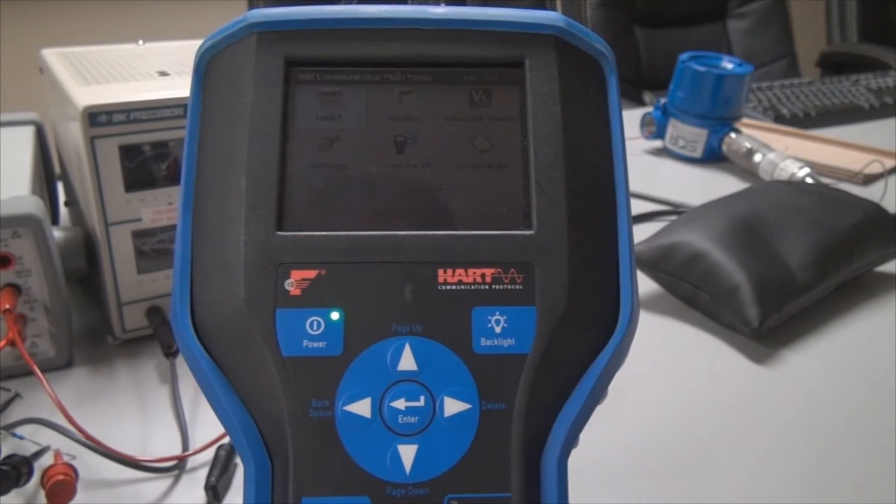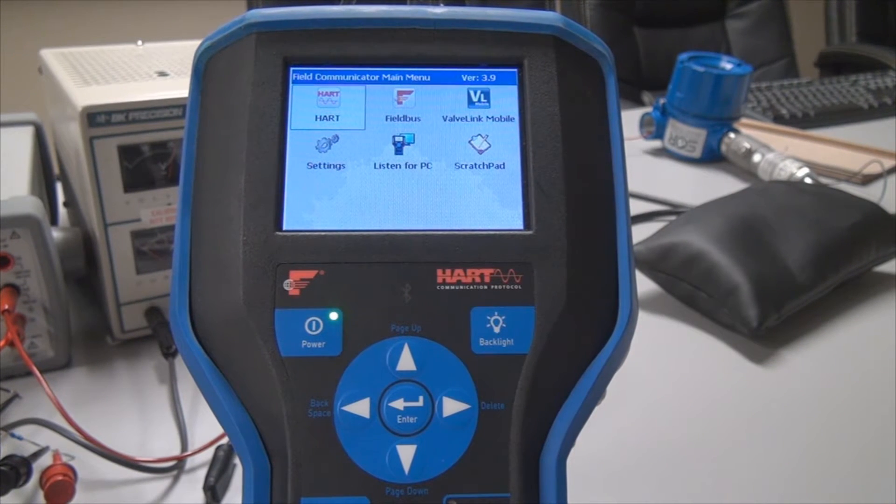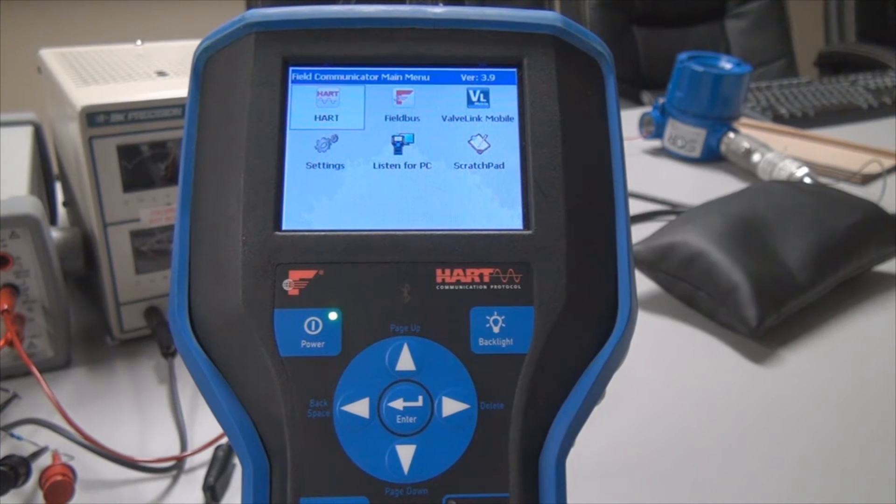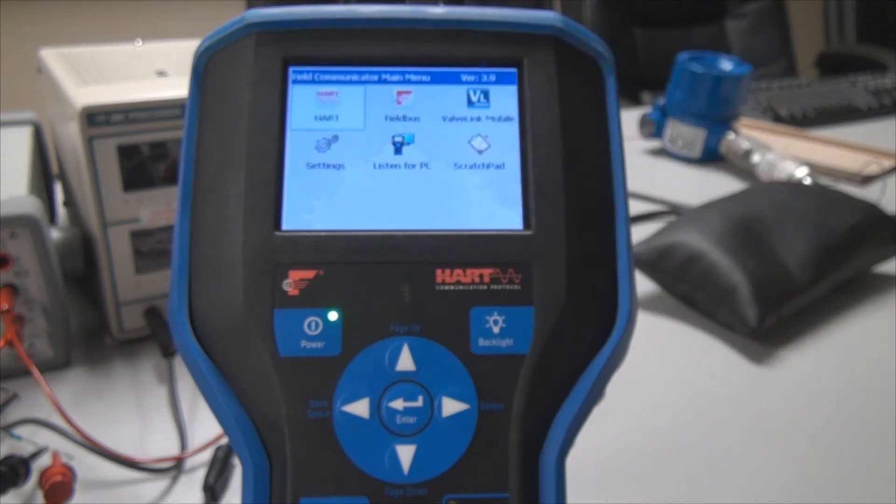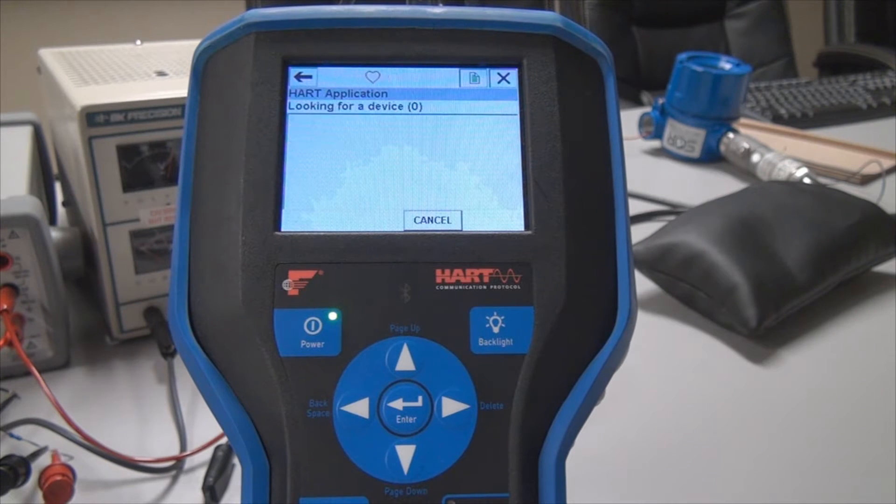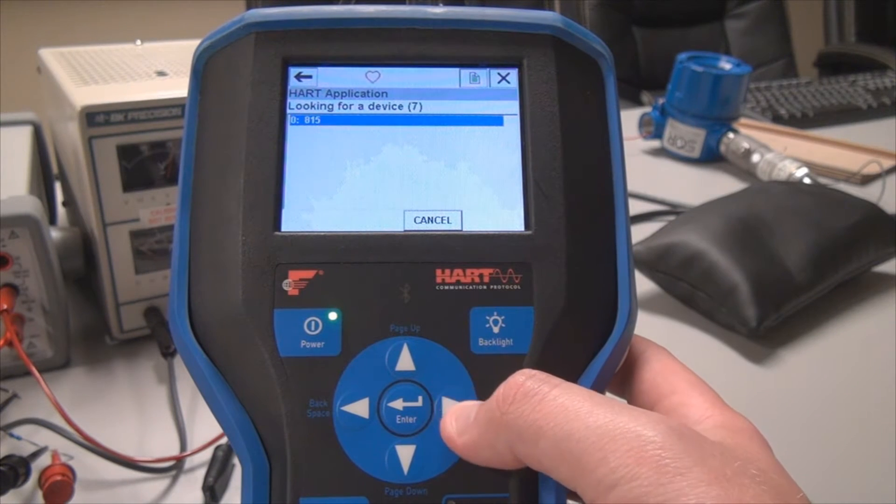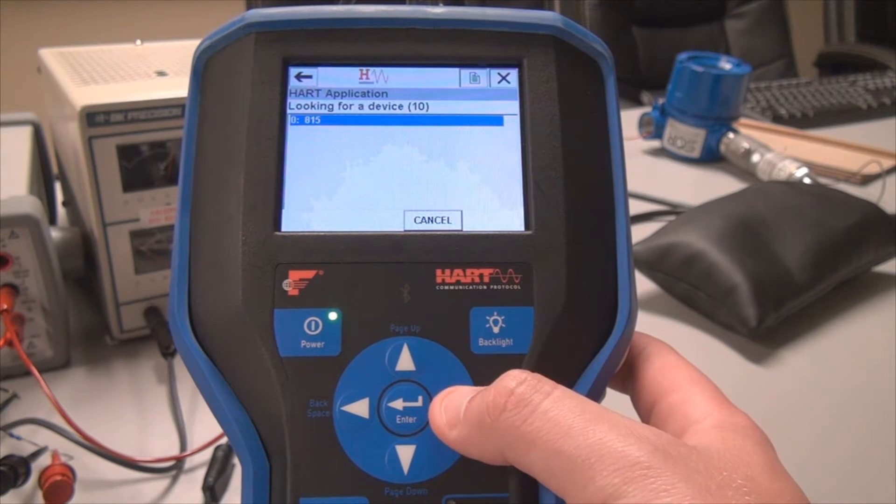So the first thing that you're going to do, after you have all the wires hooked up in accordance to our wiring diagrams and our GI, you're going to click on HART here, wait for it to load, and then it's going to pop up 815 right there. You're going to click the right button arrow to move to the next screen and pick that.